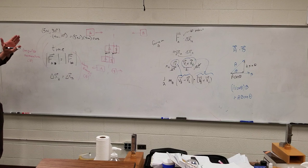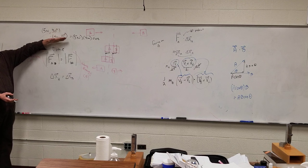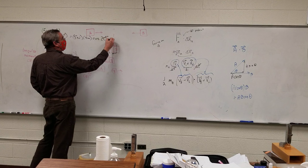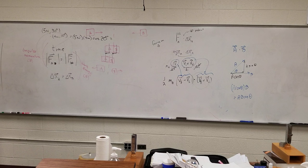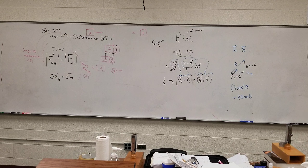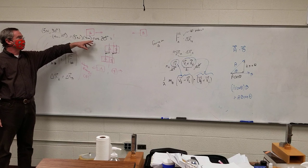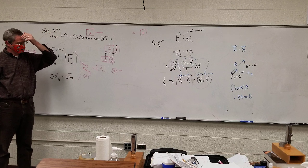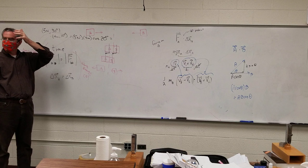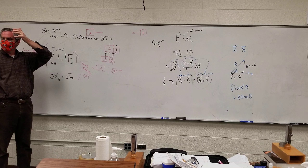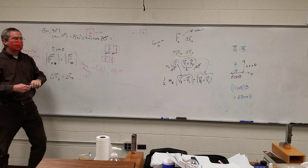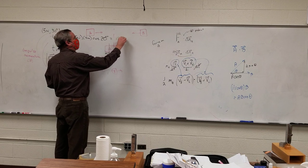It's the angle between them. This one's at 10 degrees, that one's at 30 degrees — the difference between them is 20 degrees. So: 5 times 4 times cosine of 20 degrees equals 18.79 newton·meters.